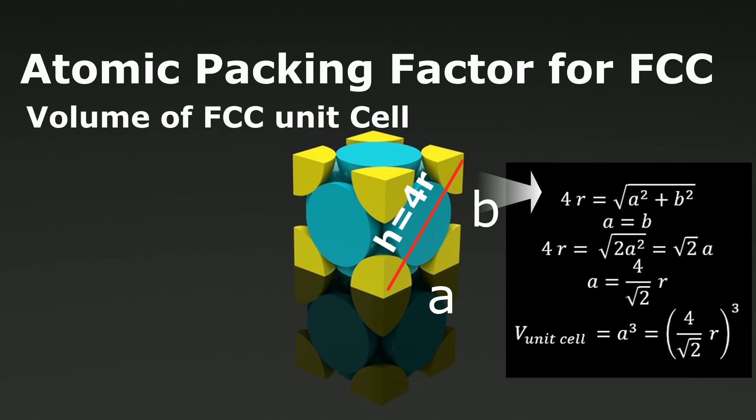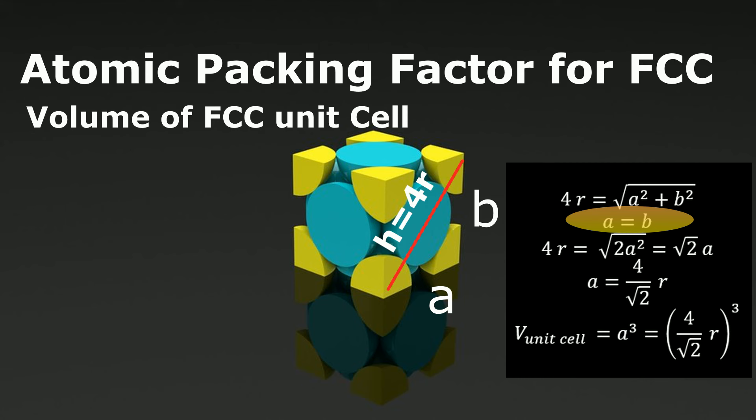4r = √(a² + b²). We know that all the sides in a cube are equal, so solving this equation for 'a', we get a = 4r / √2.